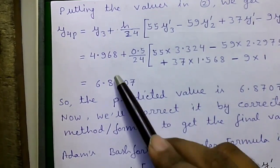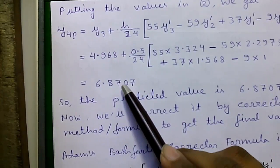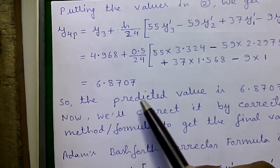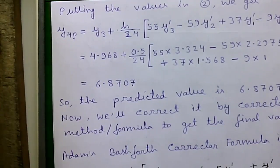So, by calculating this, you will get the value 6.8707. So, the predicted value is 6.8707.